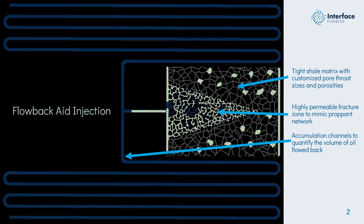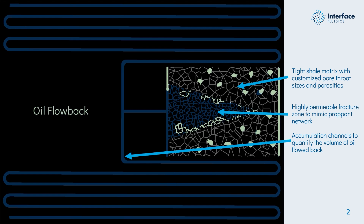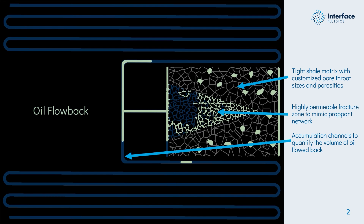The way the test actually works is by making up your completion and stimulation fluid in the lab — we take that fluid and inject it into the chip. The chip is pre-saturated with oil to start, so when we inject we're monitoring the displacement efficiency in both regions, then we allow the chemistry to soak and do its job. At that point the direction of flow is reversed, so now we're injecting oil from the right-hand side to the left, looking at what we call regain saturation.